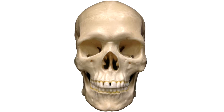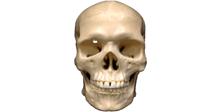The frontal bone's flat forehead region is called the frontal squama. The thick ridges above the eyes are the supraorbital margins or supraorbital ridges. On the supraorbital margin you may see either a hole or a cut — these are the supraorbital foramen and the supraorbital notch respectively. On a test I would ask what is the hole or cut above the eye — a foramen is a hole where blood vessels and nerves pass in and out.